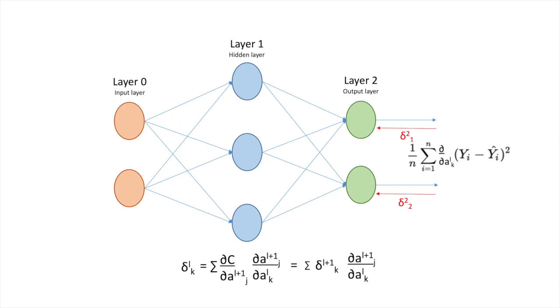In this network, delta_1^1 can be calculated by delta_1^2 times da_1^2/da_1^1 plus delta_2^2 times da_2^2/da_1^1. Similarly, delta_2^1 and delta_3^1 can be calculated with the help of previous layer's delta.